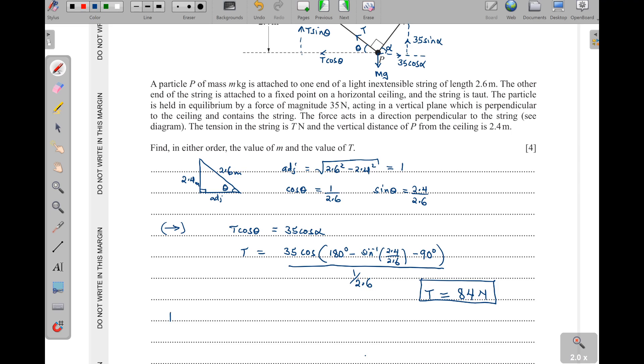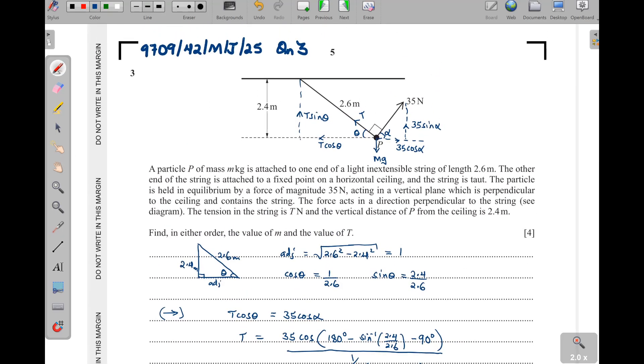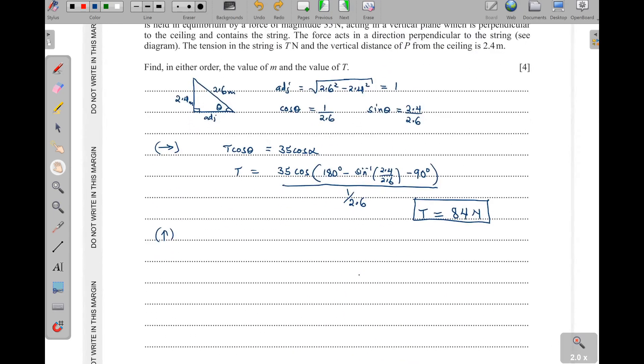Then we can go to the forces that are resolved vertically. Vertically, we can see that we have this T sine theta, this one going up. There is also 35 sine alpha, and then there is mg going down. So I will say T sine theta plus 35 sine of alpha, then this one will be equal to mg.